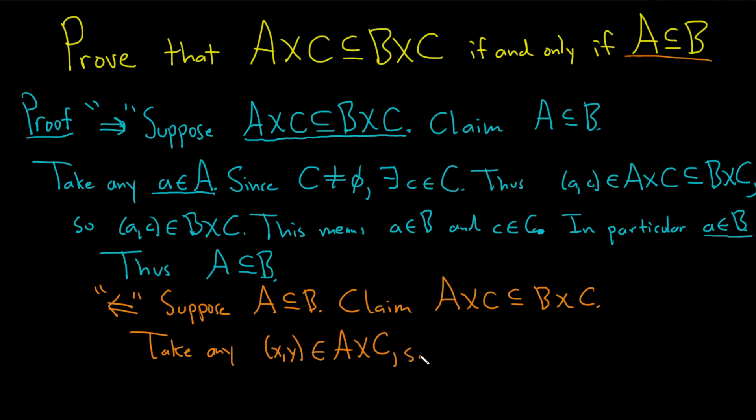So what does this mean? So this means that X is in A, going a little bit faster, and Y is in C. And so now we have to use our hypothesis, right? A is a subset of B. So since X is in A, which is a subset of B, we also have X in B. So we have X in B.